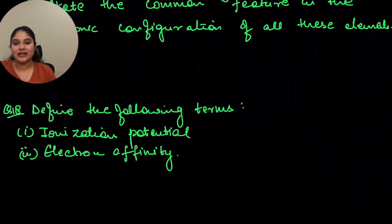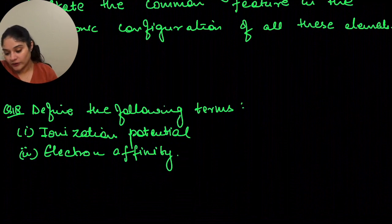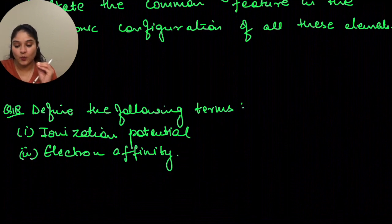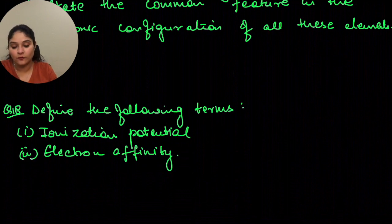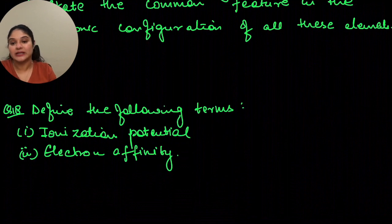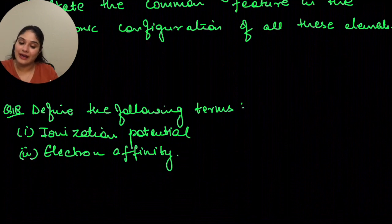Define the following terms. Ionization potential: it is the energy required to remove an electron from the outermost shell of an atom in its isolated gaseous state, thereby forming a positive ion. Electron affinity: it is the energy released on adding an electron to the outermost shell of an atom in its isolated gaseous state, thereby forming an anion.